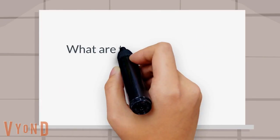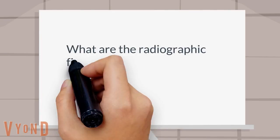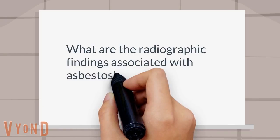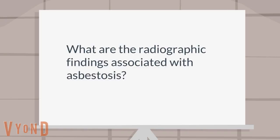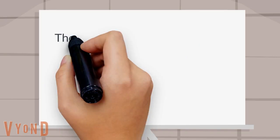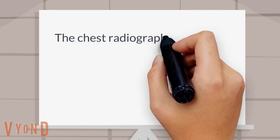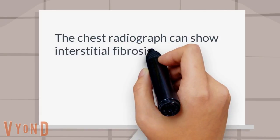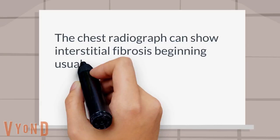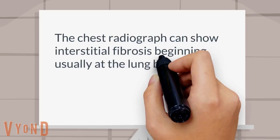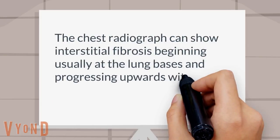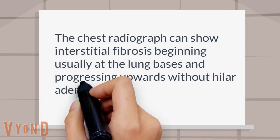What are the radiographic findings associated with asbestosis? The chest radiograph can show interstitial fibrosis beginning usually at the lung bases and progressing upwards, without hilar adenopathy.